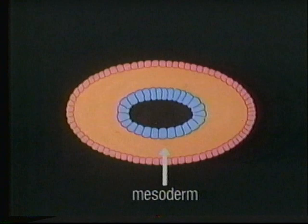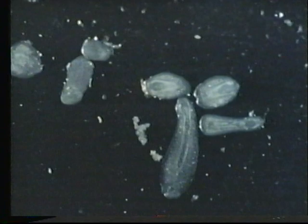Flatworms have a three-layered body. In between the ectoderm and endoderm is a third layer of tissue, the mesoderm. The platyhelminths include several groups of parasites. Tapeworms live in the guts of other animals; they have long ribbon-like bodies divided into compartments. Hooks on the head anchor them to their host's gut wall. The flukes include both external and internal parasites, which cling to their hosts by suckers.